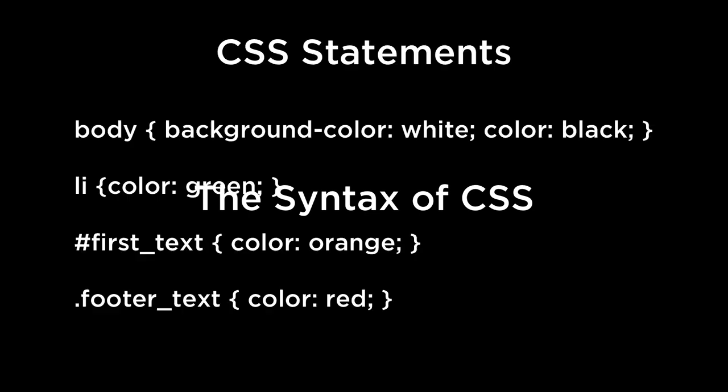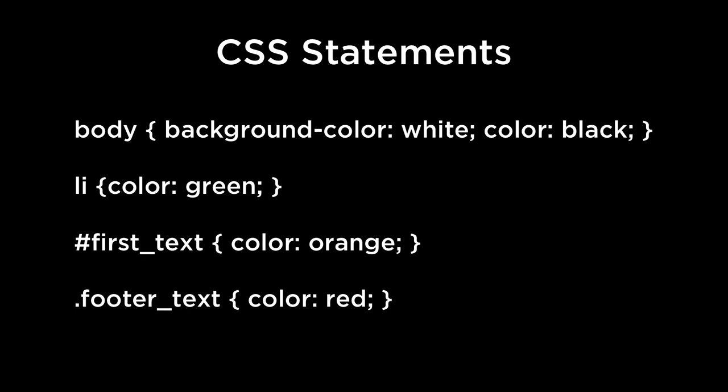The syntax of CSS. CSS statements will often look like the following. The first part of the statement is called the selector. The selectors li, hashtag first_text, dot footer_text, are patterns used to select the elements you want to style. The second part of the statement is what is enclosed within the curly brackets, or braces for those of you in the UK. The enclosed part specifically defines how the element or elements selected will be styled. You may notice that some of the selectors have a period in front of them, some have a hash mark, or a number sign in front of them, and some have nothing.